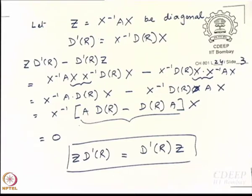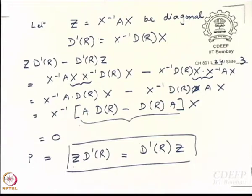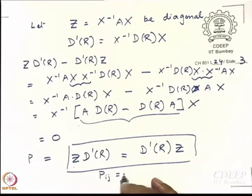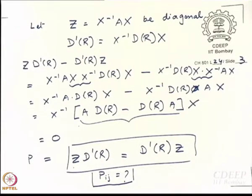What we are trying to prove is that A is a constant matrix. What we have done so far is proven that the similarity-transformed matrices Z and D'R also commute with each other. Now we will talk about matrix elements. It does not matter whether you multiply Z by D'R or D'R by Z — you get the same product matrix P. Using the rules of matrix multiplication, let us find the expression for the (i,j)-th element of P.